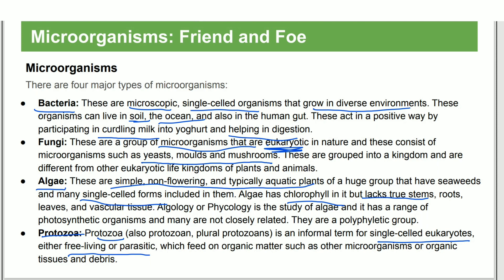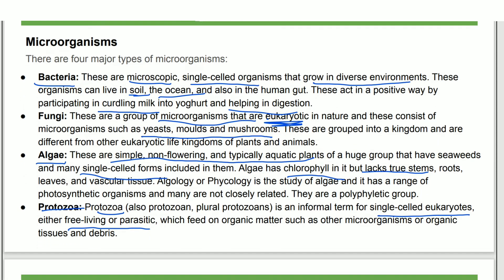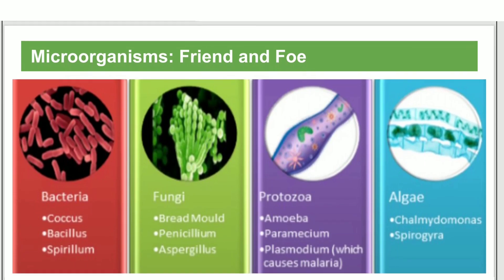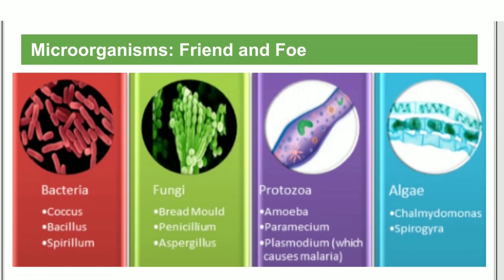Examples of bacteria include coccus, bacillus, and spirillus. Examples of fungi include bread mold and Penicillium, Aspergillus. Protozoa examples include amoeba, paramecium, and plasmodium. An example of algae is spirogyra.